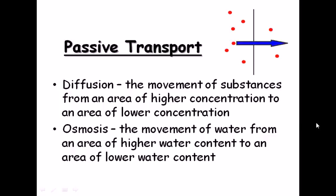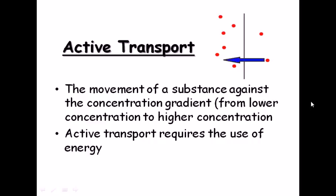Osmosis is the movement of a solvent molecule — in biological systems, usually water — from an area of higher water concentration to an area of lower water concentration. To balance the concentration on both sides, instead of the solute molecules traveling, water flows from the side with higher water content toward the side with lower water content to balance the solute present in the solvent.